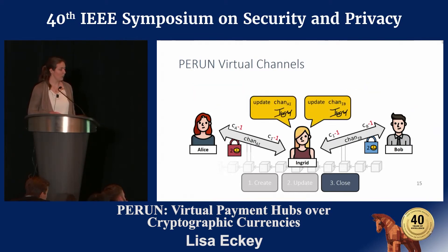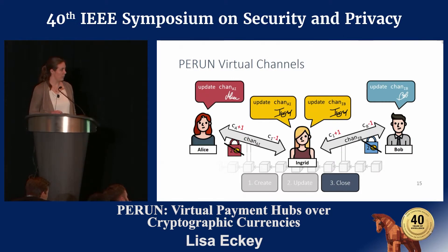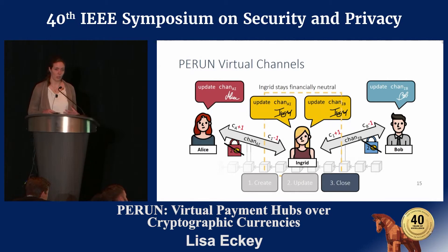Ingrid then proposes updates to the underlying ledger channels: the two coins that were locked are now unlocked. On Alice's channel, Alice gets two coins — meaning Ingrid loses one coin. But on the other channel, Ingrid gets two coins that were locked, and Bob loses one coin. So Ingrid stays financially neutral — she didn't lose any coins. Bob has one coin less and Alice has one coin more. The payment happened.